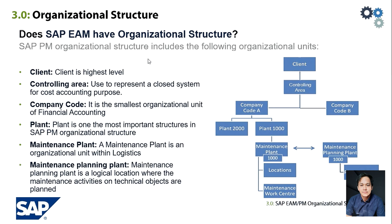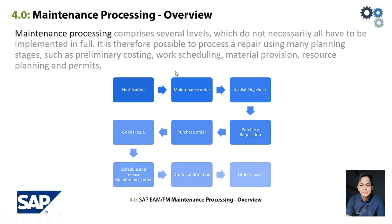Fifth is the maintenance plant, where technical objects are physically present and maintenance activities are carried out. The last is the planning plant, where maintenance tasks for the objects are planned and prepared.